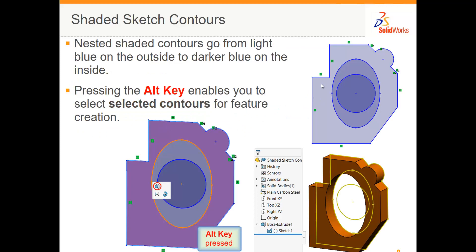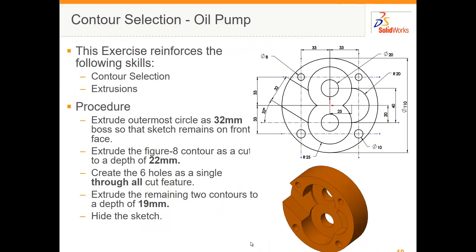When you have nested contours you can see they go from light on the outside to darker on the inside, and if you press the Alt key you can select any of these regions for extrusion. We'll look at an example of an aisle pump profile with all the features in a single sketch, and use that single sketch to create all the features.